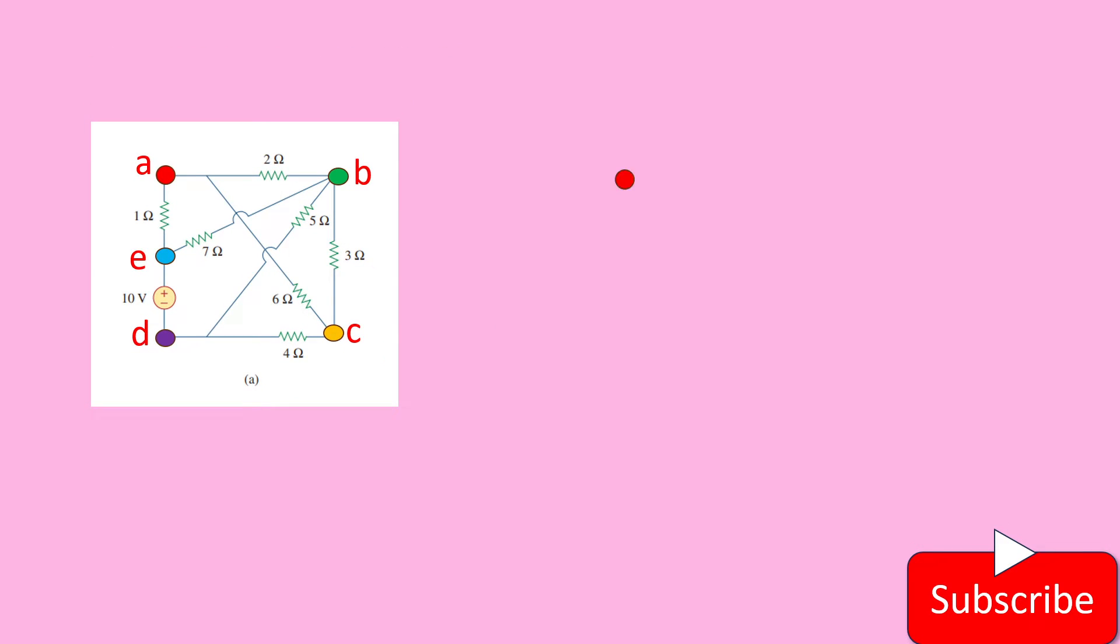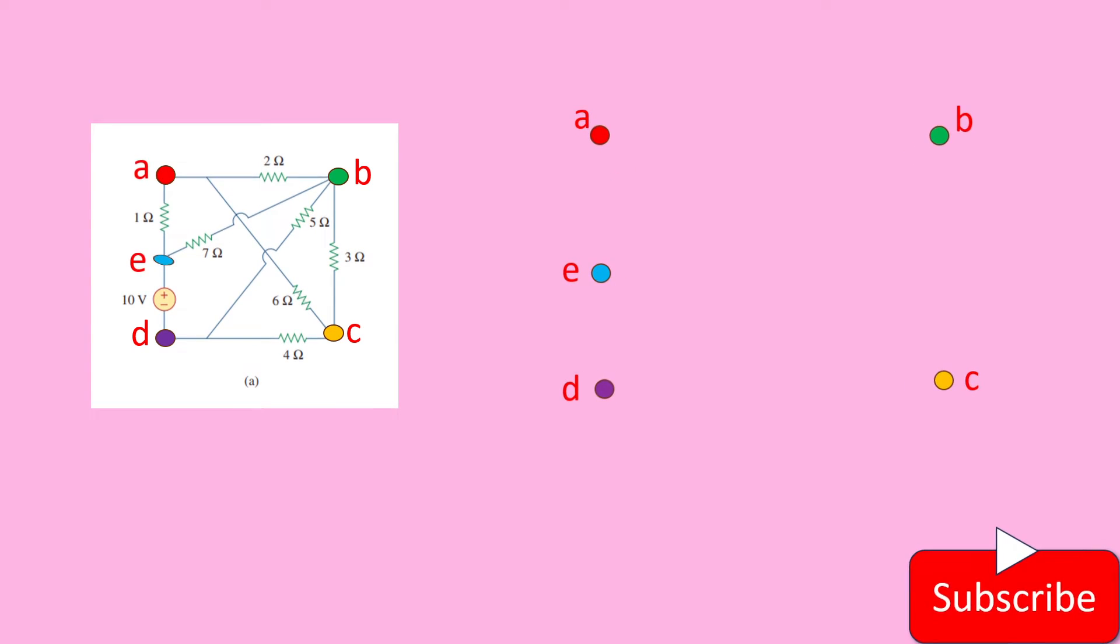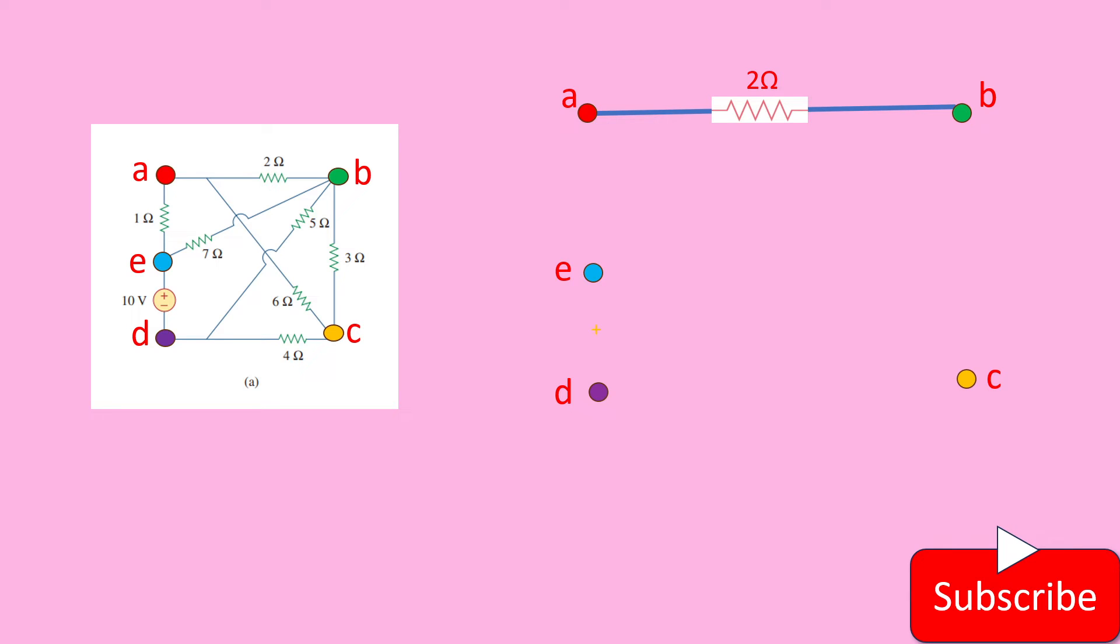So now we mark the nodes A, B, C, D, E and then we connect the branches between A and B with the 2 ohm resistance. Between B and C, 3 ohm resistance. Between A and E, 1 ohm resistance. And between E and D, we have 10 ohms voltage source connected.